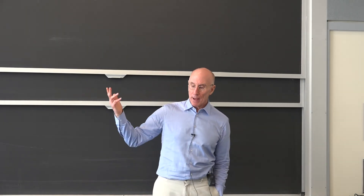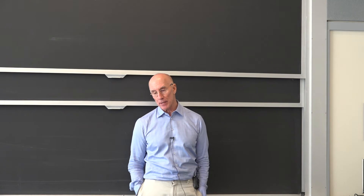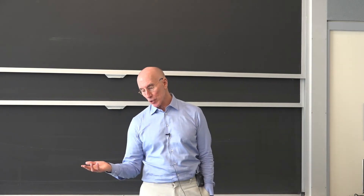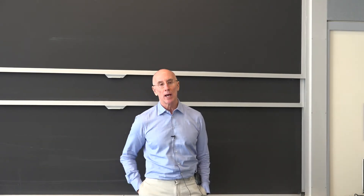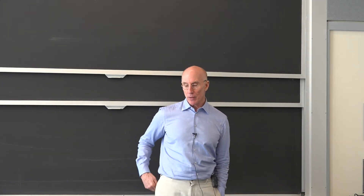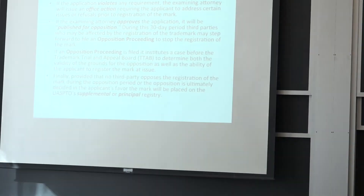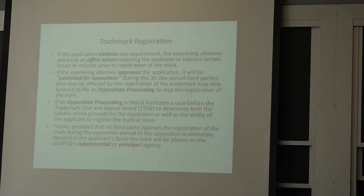If the application violates any requirements, the examining attorney will issue an office action requiring the applicant to address the deficiency. If the examiner approves the application, it will be published for opposition. During this 30-day period, third parties who might be affected by the registration — such as Krusty Krab or swim fins — may step forward to file an opposition proceeding. If an opposition proceeding is instituted, it is litigated in front of the Trademark Trial and Appeal Board, or TTAB.